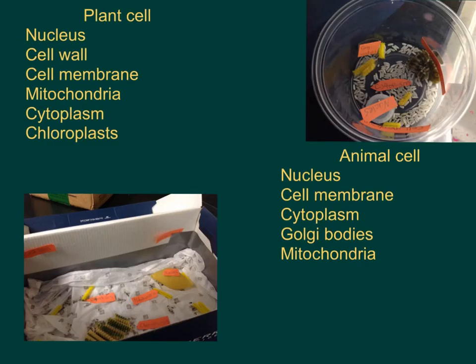For a plant cell, the nucleus is the boss of the cell — it holds all of the DNA. The cell wall protects all of the substances inside of the cell. The cell membrane controls what comes and goes.